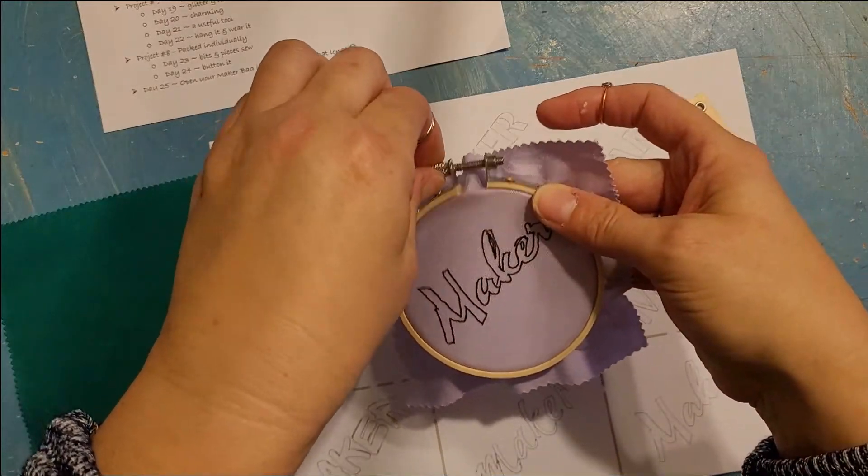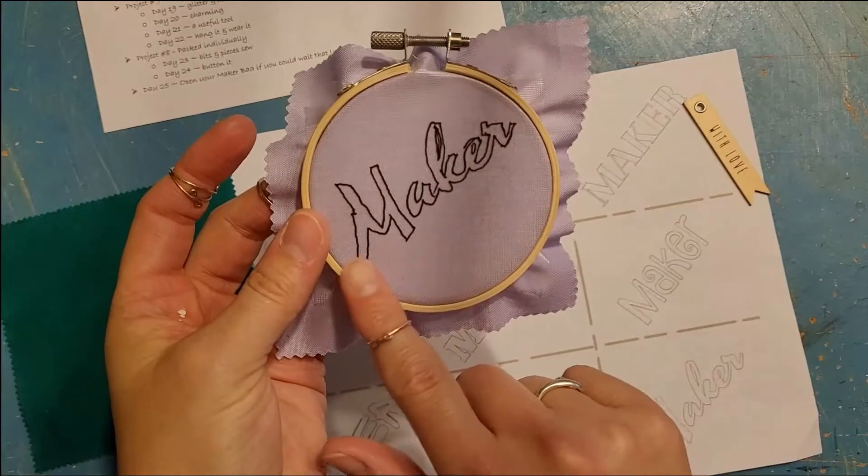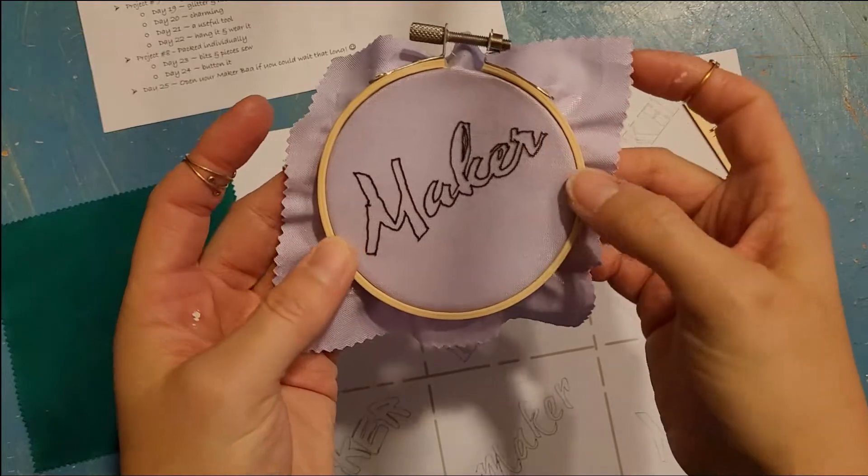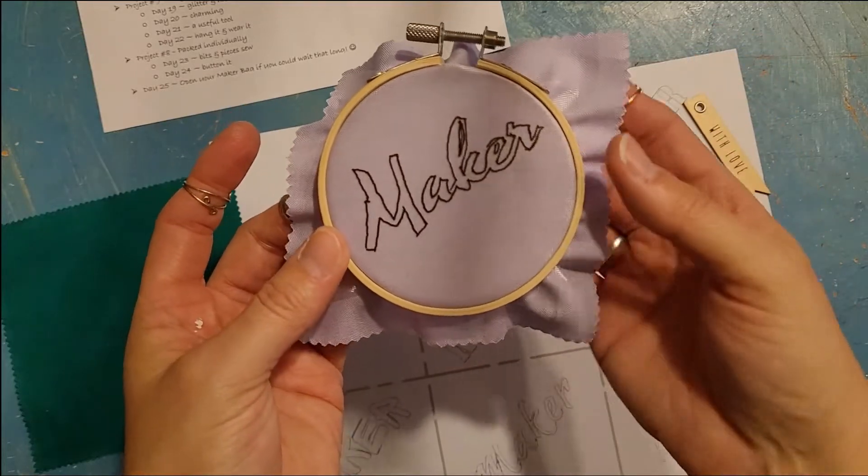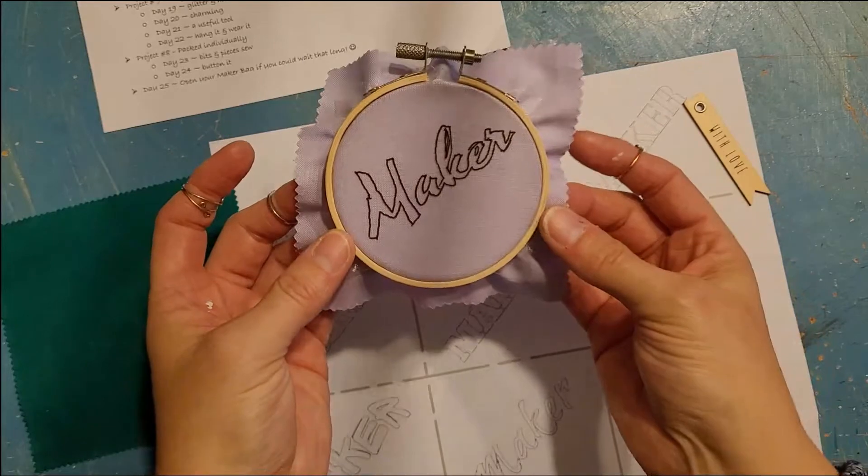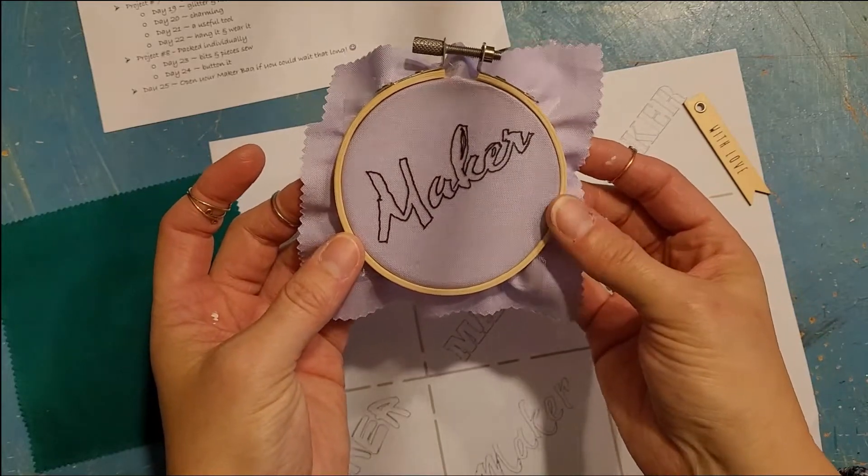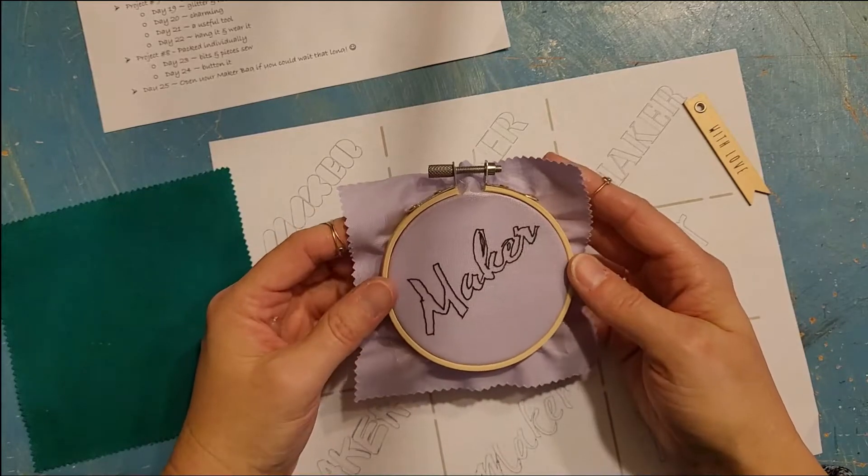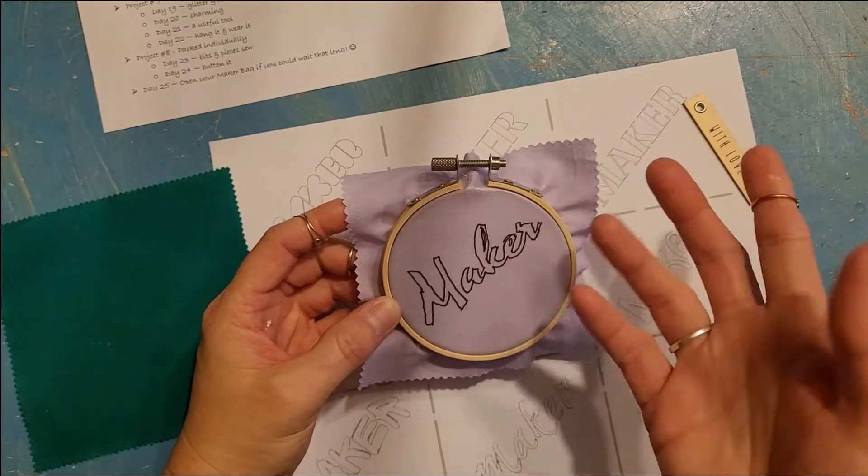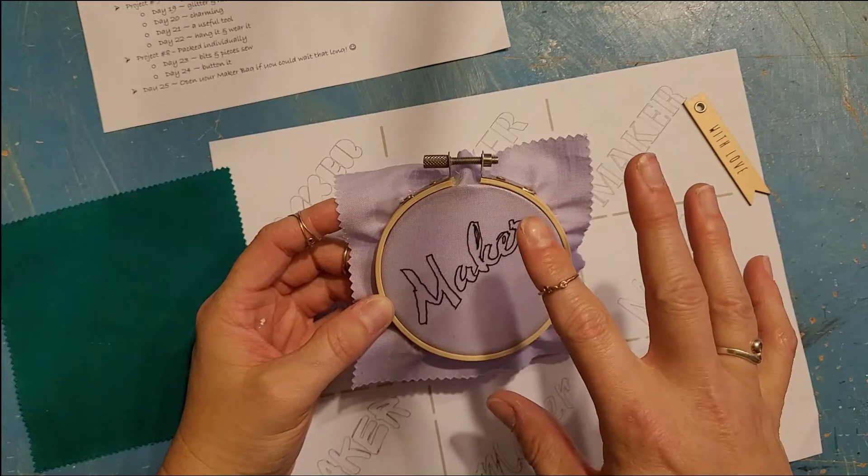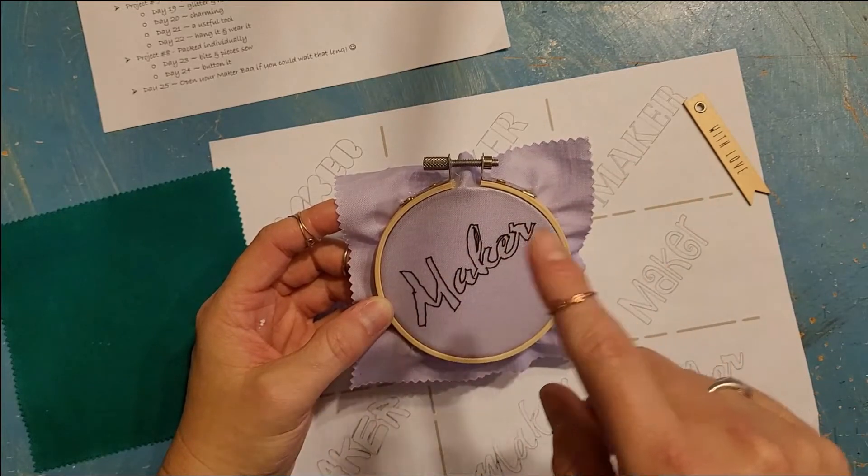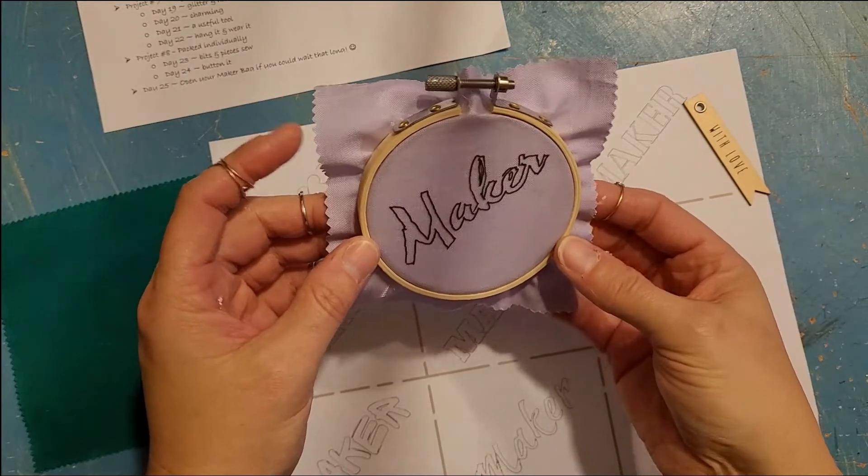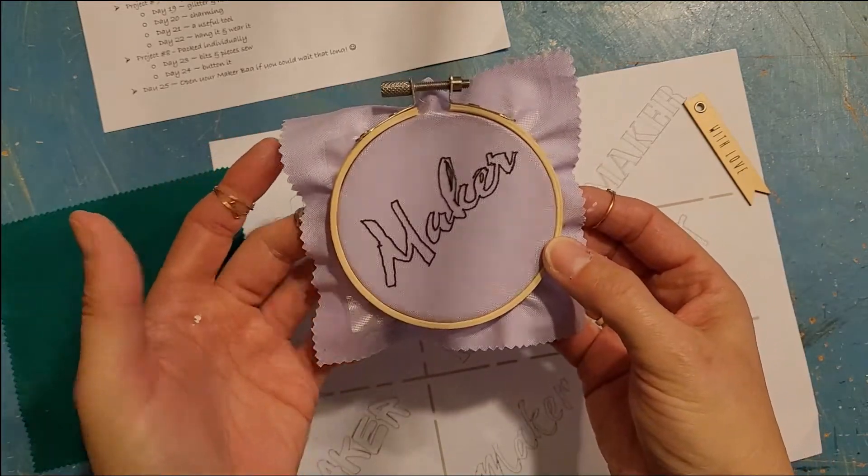All right, so this is really short today. This is all we're doing, putting this in here. You just want to make sure enough room to get a needle through there obviously. So there is what we do today, just putting it in a hoop. I know some of these, once you get to the next part it's going to take a little longer obviously, but sometimes I had to break them down into steps and some of the steps are very simple. It's always nice to have a simple day, right?